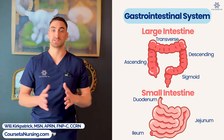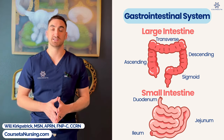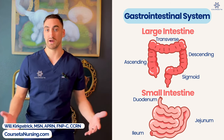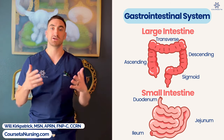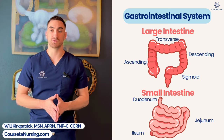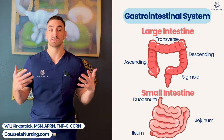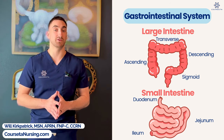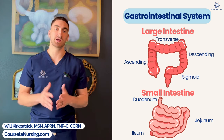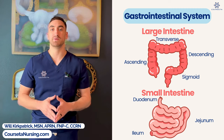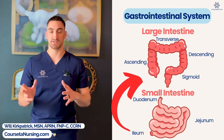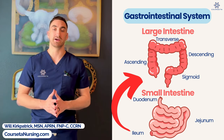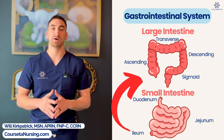To understand the pathophysiology and compare these two diseases, we need to know about the GI system. The GI system is essentially a tube that goes through our bodies — from the mouth all the way down to the anus. It's important to absorb nutrients and water so our cells remain happy. The main structures to know are the small intestine, which includes the duodenum, jejunum, and ileum, and the large intestine, which includes the ascending, transverse, descending, and sigmoid colon.